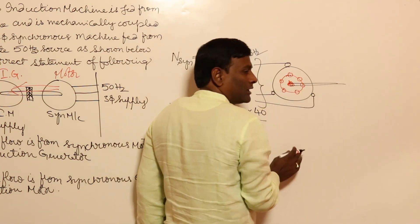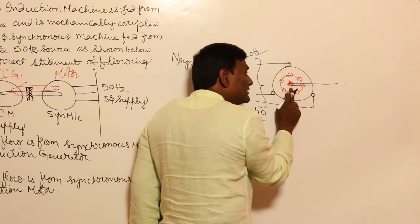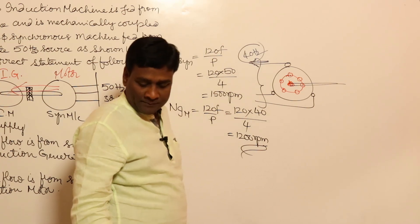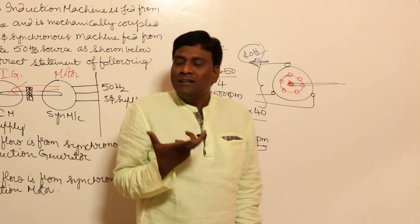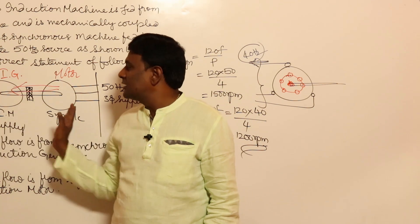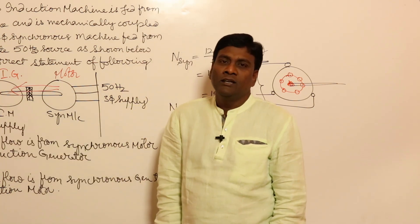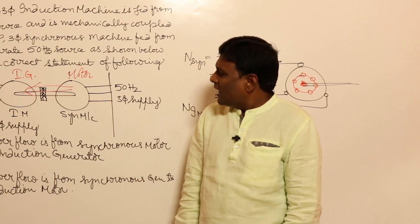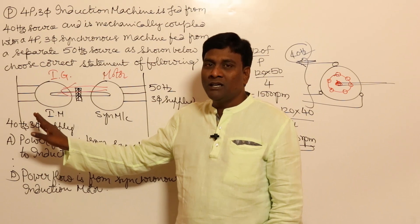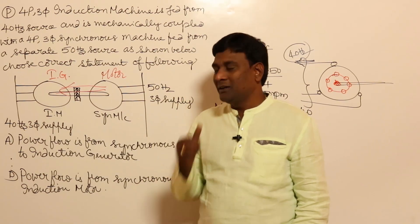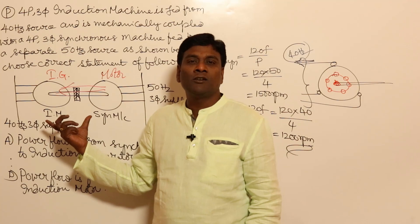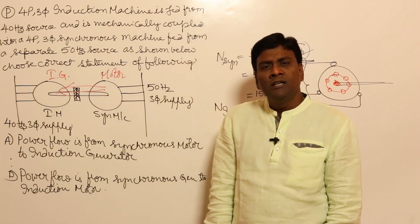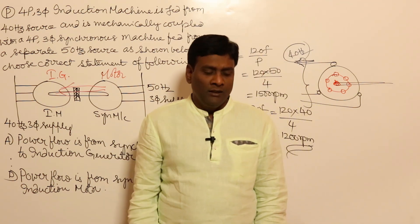The synchronous motor can rotate the induction machine above its synchronous speed, causing it to deliver electrical power at 40Hz. This allows different frequency grids to be connected through this arrangement, which can be called an asynchronous transmission link. If we replace these machines with power electronic circuitry to transform power between different frequency grids, it becomes an HVDC link.